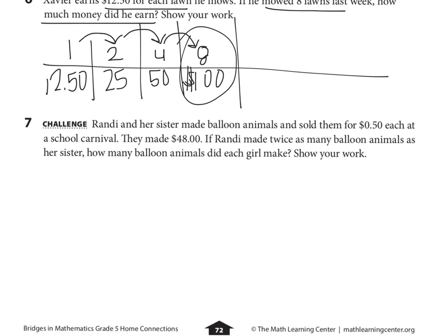Challenge problem. Randy and her sister made balloon animals and sold them for $0.50 each at a school carnival. They made $48. If Randy made twice as many balloon animals as her sister, how many balloon animals did each girl make? So let's look back at the problem. Randy and her sister made balloon animals and sold them for $0.50 each. They made $48 total. If Randy made twice as many balloon animals as her sister, how many balloon animals did each girl make?